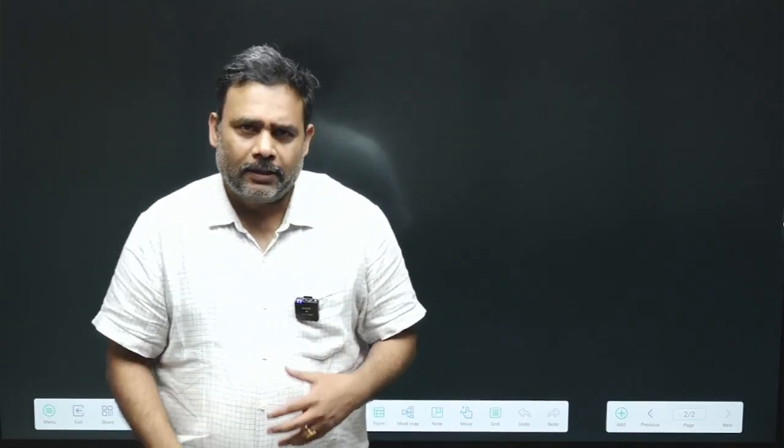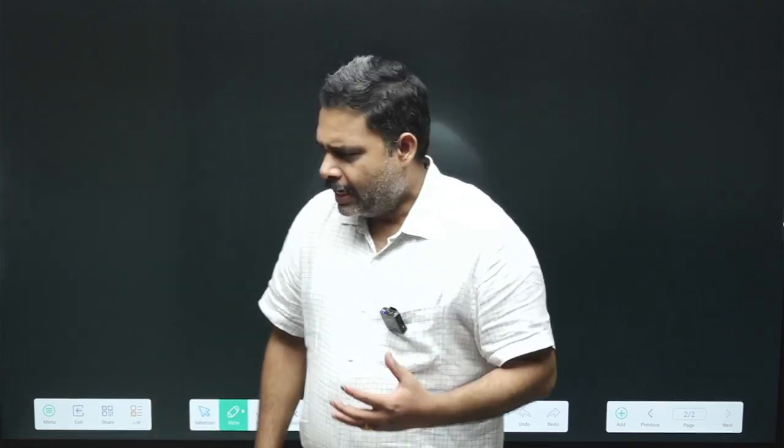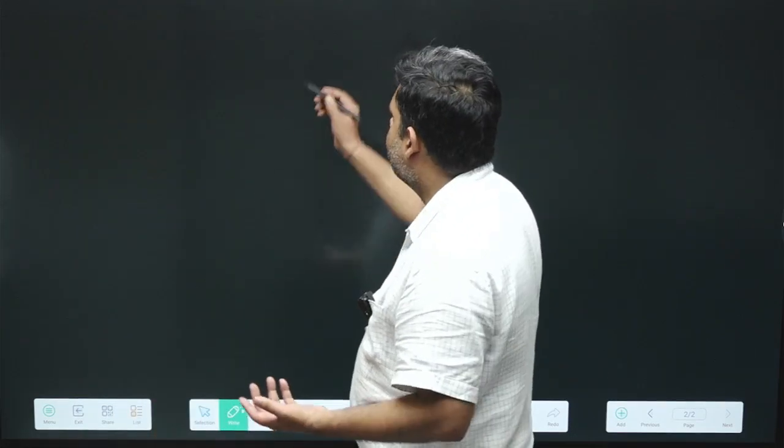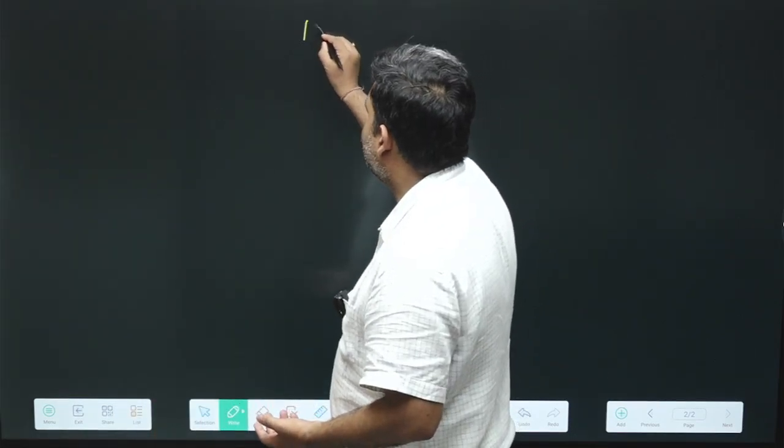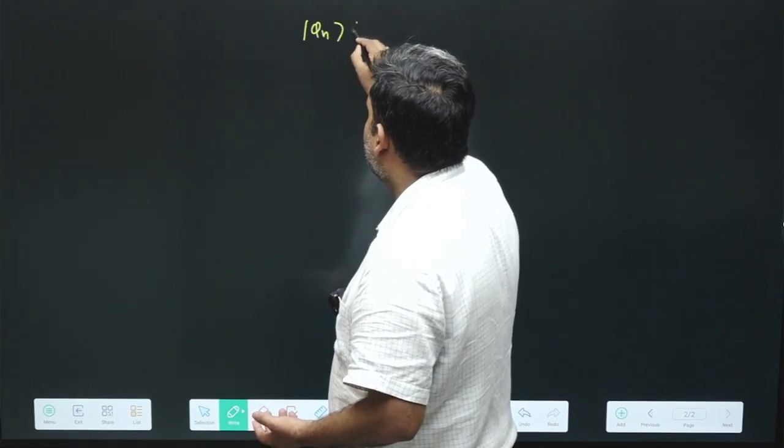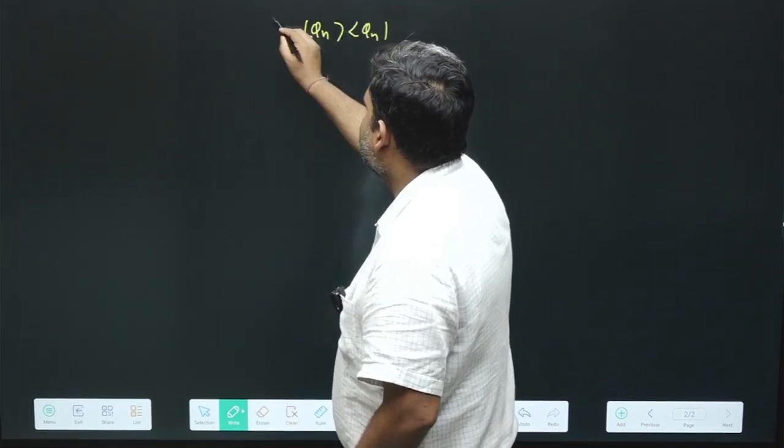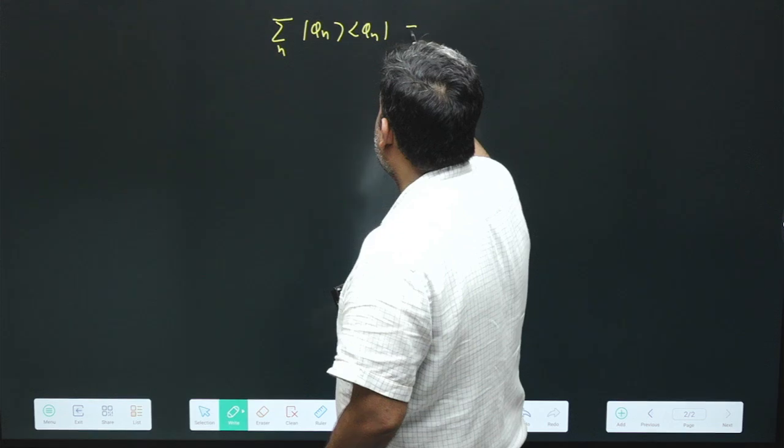Let us try to understand what is the role of completeness relation in quantum mechanics. And if you have completeness relation, you can have something like summation over n, phi n phi n, must be equal to identity.